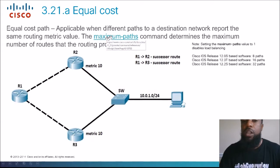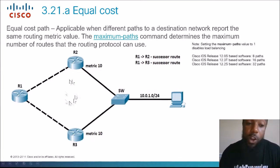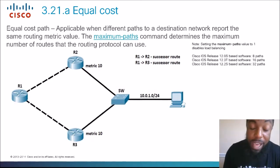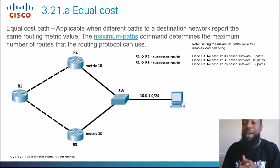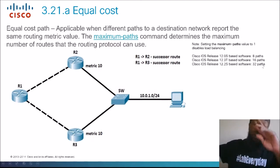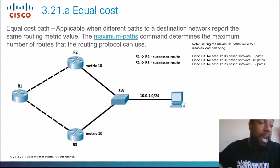Different IOS versions support different maximum path values. IOS 12.0S supported 8 paths, 12.0(3)T supported 16 paths, and IOS 15 and above supports up to 32 paths — useful for large corporate networks with many paths to a destination.